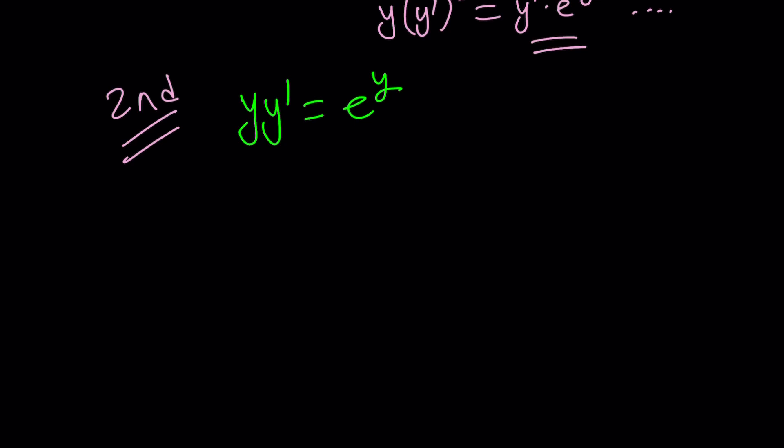So second method is based on the separability of this equation. This is a separable differential equation. What does that mean? We can write y prime as dy over dx, and then separate the variables x and y. We can multiply both sides by e to the power negative y times dx, which gives us the following. y e to the negative y dy equals dx. Nice. Variables are separated. Everything is good to go.